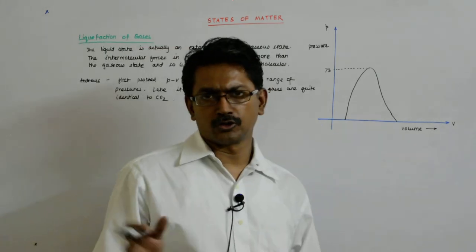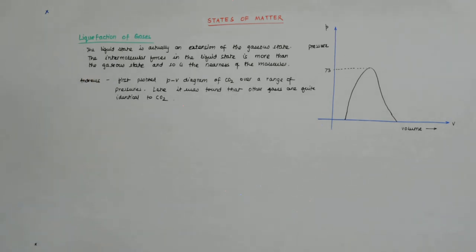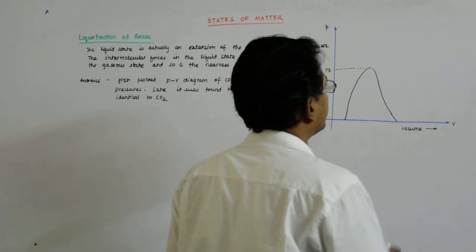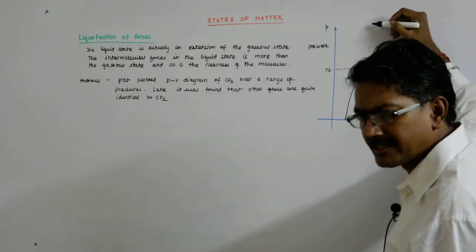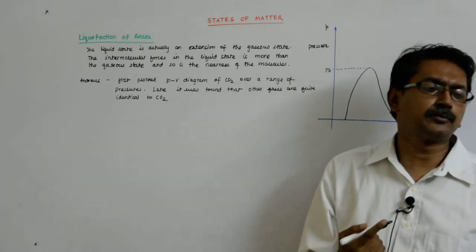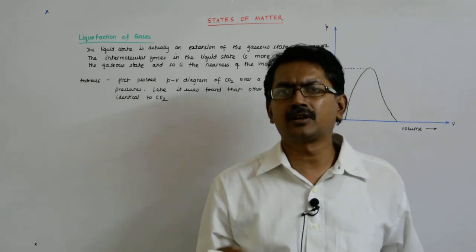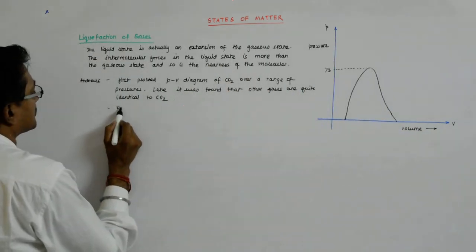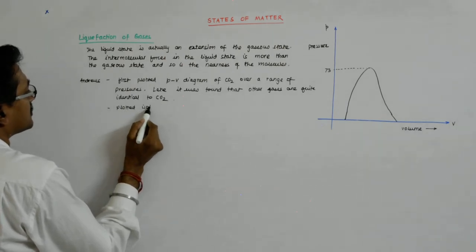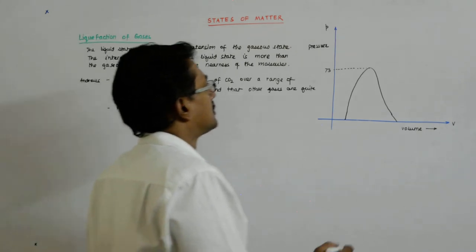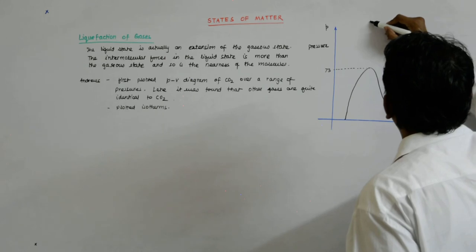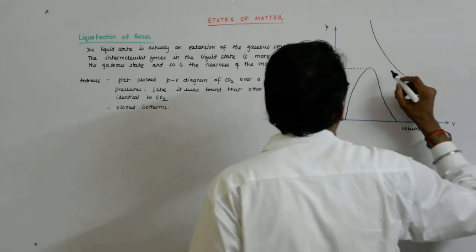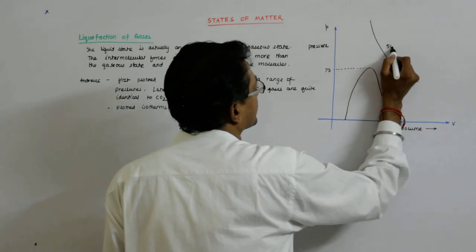Now he plotted the PV curve at a constant temperature. If you're trying to plot a PV curve, it has to be at a constant temperature, and so it is an isotherm. At a much higher temperature, it resembled the PV diagram of gas. So at 50 degree centigrade it was this.